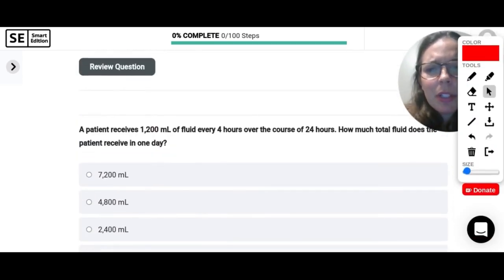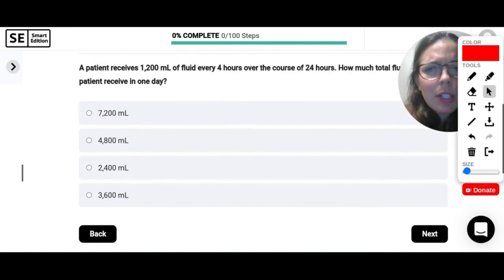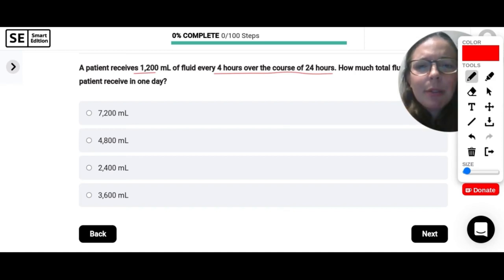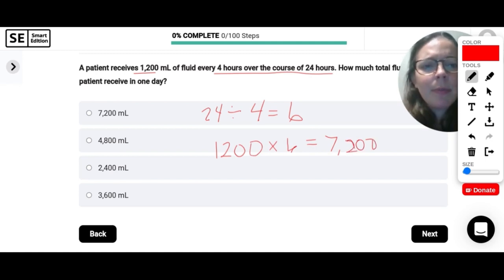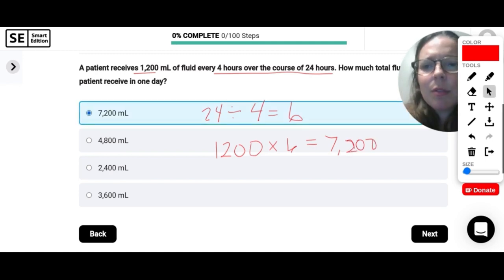The patient receives 1,200 milliliters of fluid every 4 hours over the course of 24 hours. How much fluid does the patient receive in 1 day? So they get this much every 4 hours. And we want to know how much they get in 1 day. So how many times are they getting this fluid? Let's take the 24 hours in a day and divide it by the 4 hours. The every 4 hours that they get it. So they're going to get it 6 times. So let's take our 1,200 milliliters and multiply it by 6, and we will get 7,200 milliliters.